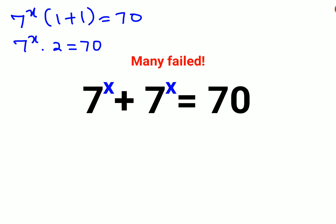Now in order to find the value of x, we will divide both sides by 2. So I'm left with 7 to the x equals to 35.